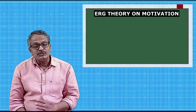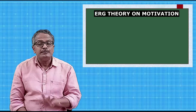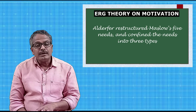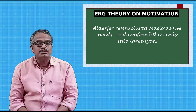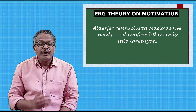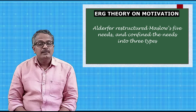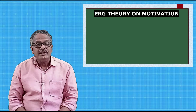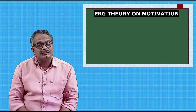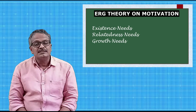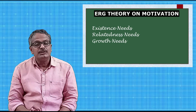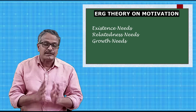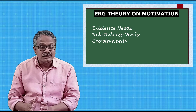We have already studied that Maslow's theory describes five types of human needs. Under ERG theory, Alderfer restructured Maslow's five needs and confined them into three types. According to Alderfer and his ERG theory, there are only three types of needs: existence needs, relatedness needs, and growth needs. ERG is the acronym of these three words — existence, relatedness, and growth.